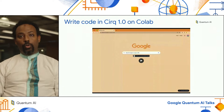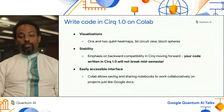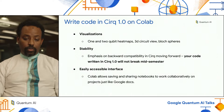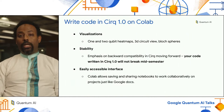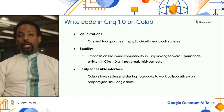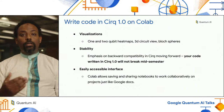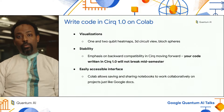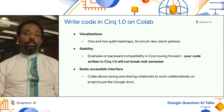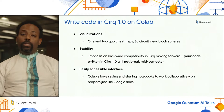What are the benefits for an educator writing code in Cirq 1.0 on CoLab? First, you get access to visualization — in addition to one and two qubit heat maps, you also get access to Bloch spheres and the 3D circuit view. An important update is our emphasis on backward compatibility in Cirq 1.0 moving forward — if your students write code, we will not break it in the middle of a semester. There's also the easily accessible CoLab interface, which allows you to immediately launch a notebook, start writing code, save it, and share it with your collaborators just like you would any other Google Doc.